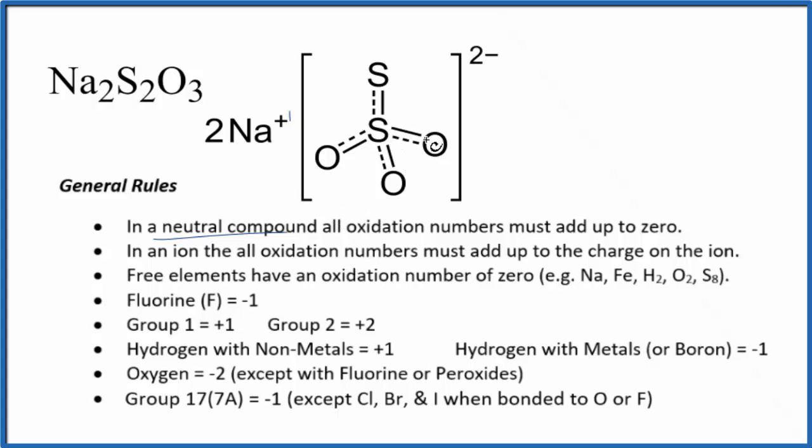You'll notice that each sulfur is different, though. When we talk about oxidation numbers, we say that the more electronegative element gets the electrons. This sulfur here is bonded to these three oxygens, which are very electronegative. Up here, it's just bonded to the other sulfur. So we would expect them to have different oxidation numbers.